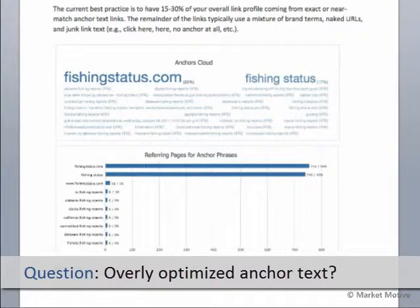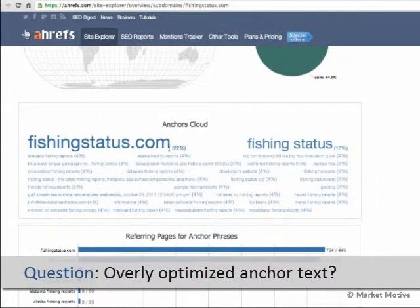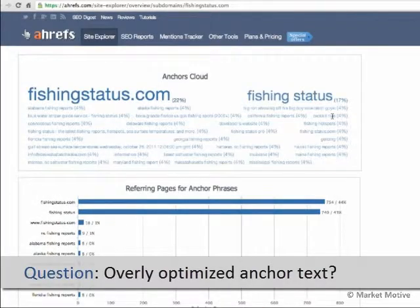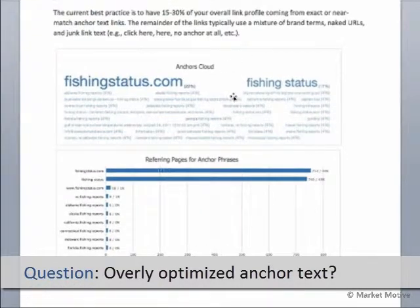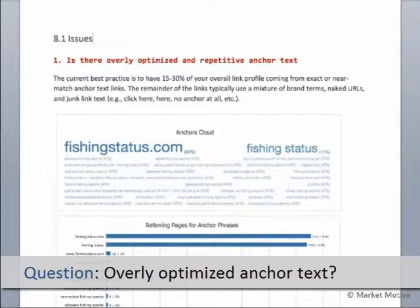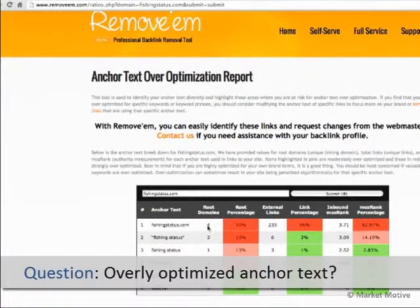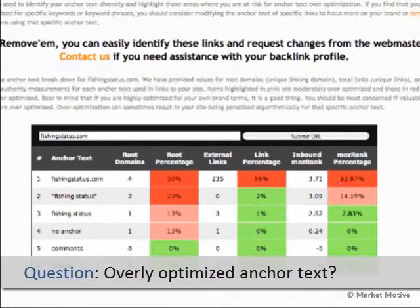We'll run this report on Ahrefs — we'll go to ahrefs.com and run our website, and we'll see what our anchor cloud looks like. It looks like 22 percent for the brand term, 17 percent for another brand term variation. These are pretty good. Sometimes your brand and the keywords are the same thing, so for a keyword brand this can be a little different, but we just need to make sure that we're not over those thresholds. We'll take a snapshot of this, put it into our report, and make recommendations if we need more or less anchor text based on what we're targeting and how much optimization has been done in the past. There's one other tool we can use: removeem.com/ratios.php — you can run the same kind of tool to check the anchor text profile and make sure you're not over-optimized.